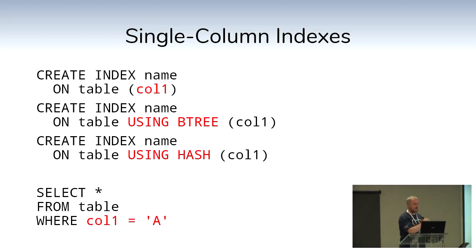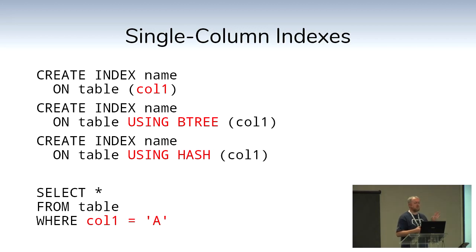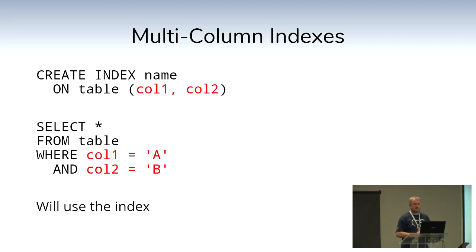A single-column index: CREATE INDEX name ON table (column1). That's equivalent to CREATE INDEX name ON table USING btree (column1) — if you don't specify the type, Postgres defaults to B-tree. You can alternatively specify USING hash, USING gin, or USING gist. To use that index: SELECT * FROM table WHERE col1 = 'a'.